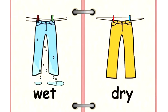In this picture you can see the clothes are hanging on the rope. The blue color pant is wet. Why? Because you can see the water is dripping down. So the blue pant is wet.